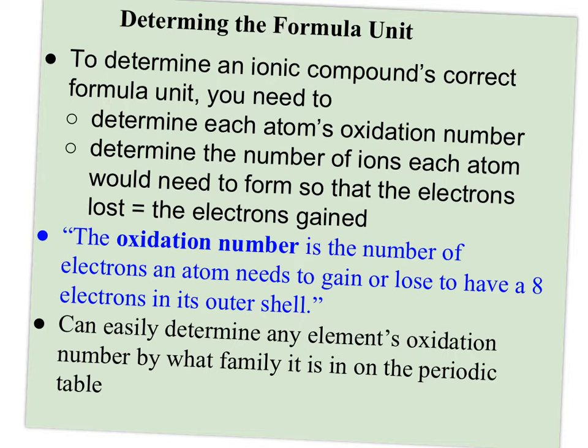So to determine the formula unit, you need to know each atom's oxidation number, which remembers just how many electrons it's likely going to gain or lose to get to the magic number of eight. And then determine the number of ions of each atom you need so that the electrons lost is equal to the electrons gained.